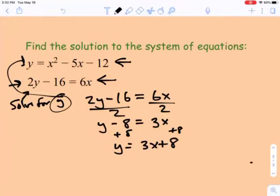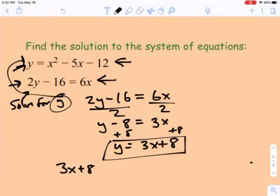So now I have my equation that I am going to take and move and set it in here. So your equation is going to look like this. It's going to be 3x plus 8 is what we're going to substitute for y right here. And then we're going to set it equal to x squared minus 5x minus 12.